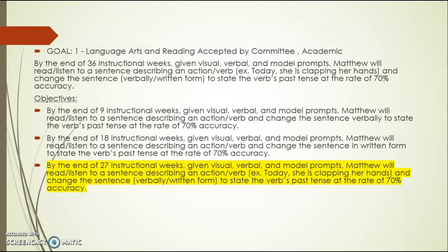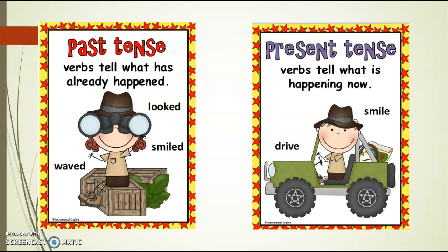We are going to be talking about action verbs — present and past verbs. Past tense verbs are always verbs that tell you what already happened. Like here: looked, smiled, waved — these are verbs that have already happened, which means they are in the past. Present verbs are telling us about what is happening right now, like smile, driving.